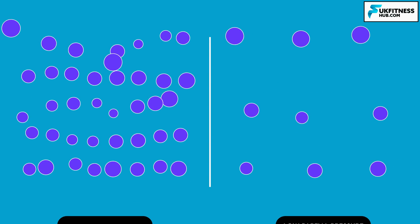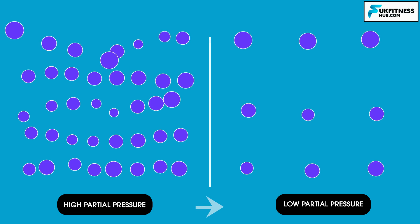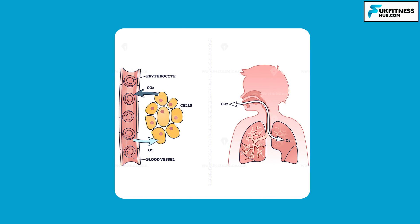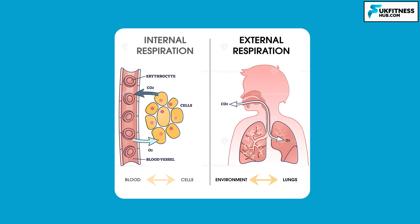In the body, oxygen and carbon dioxide change places by diffusing from areas of higher partial pressure to low partial pressure. Diffusion takes place in two areas of the body: in the lungs, to introduce oxygen into the bloodstream, and in muscles and other tissues, where oxygen moves out of the bloodstream and carbon dioxide moves into it. The diffusion of gases in the lungs is referred to as external respiration, while diffusion in other tissues such as muscles is referred to as internal respiration.